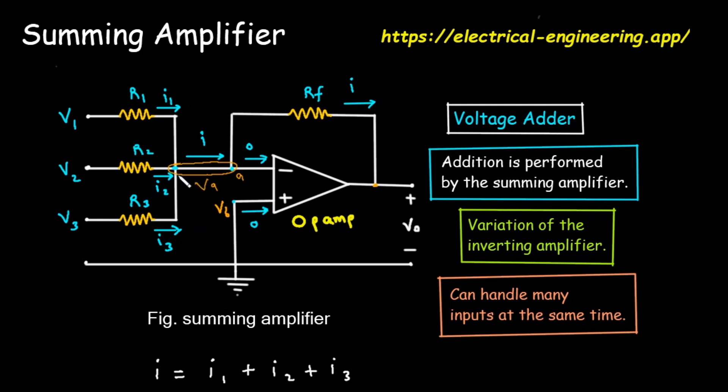Now, let's look at the non-inverting, or plus, input of the op-amp. You can see it's connected to a symbol with three lines. This is the symbol for ground. In electronics, ground is our zero-volt reference point. Everything in the circuit is measured relative to this point. So, the plus input is being held steady at zero volts. This is a critical detail.